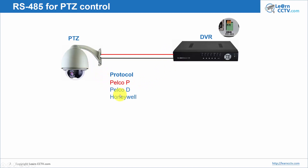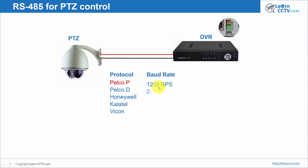There are different brands — you can use Pelco P, for example. You also have Honeywell, Calatel, and Vicon protocols. Every manufacturer has its own protocol. In this case we're going to use Pelco P because we have different brands. Then you also have to choose your baud rate — for example 1200, 2400, 4800, or 9600. I'm going to pick 9600 for this case.